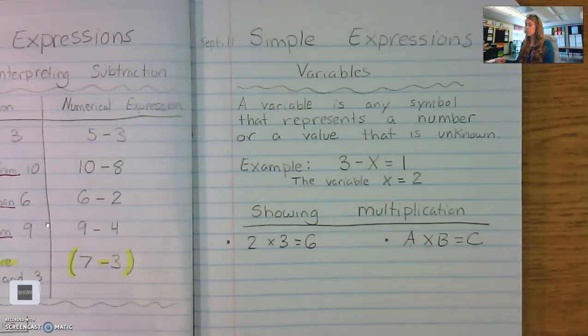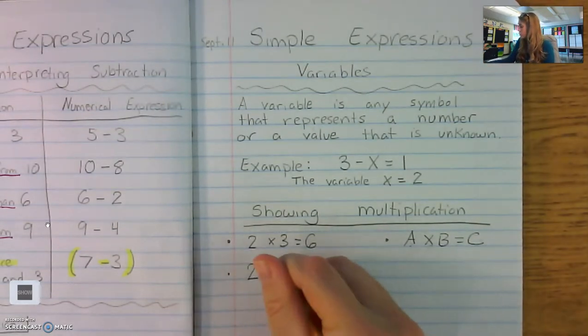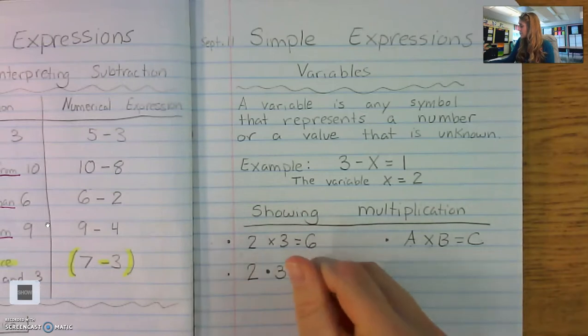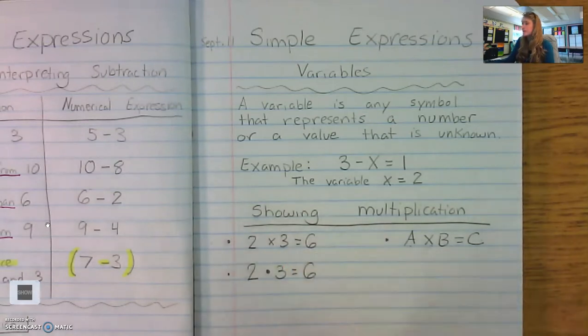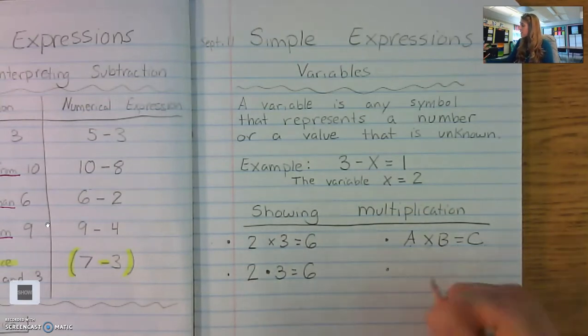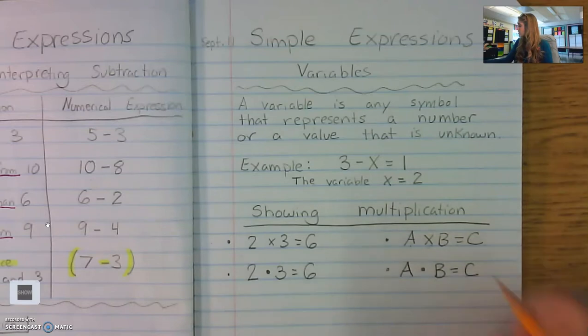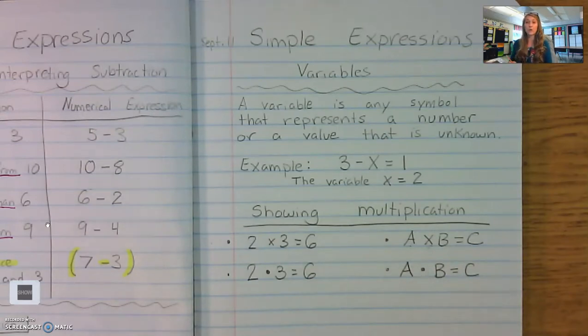So sometimes we see something that looks like this. 2 times 3 equals 6, where the multiplication symbol is represented by a dot. Now, when we come into our algebraic equation, a times b equals c. Now we don't think that there's another variable x in the mix. We see it as a dot. So that works well, too.